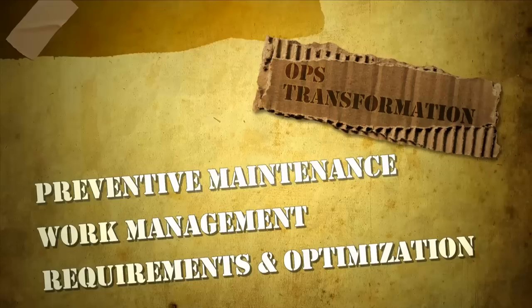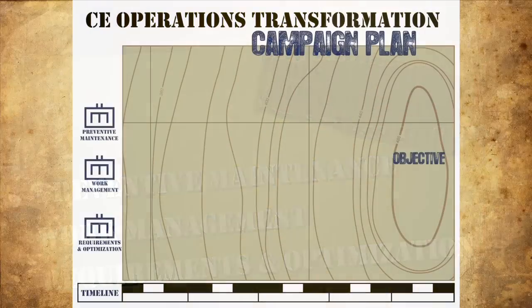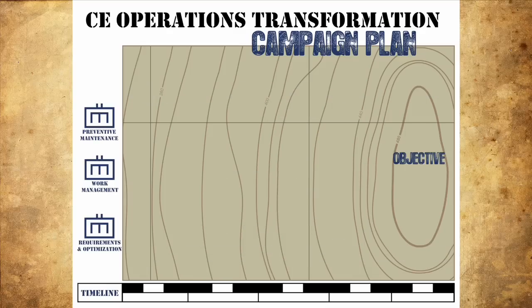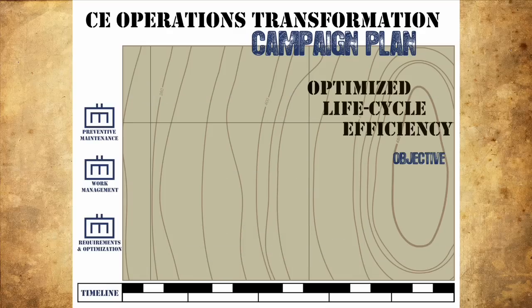Success on a modern maintenance battlefield with fewer troops, less equipment, and dwindling supplies demands a campaign plan to synchronize a way forward to help us achieve enterprise goals. This strategy is largely framed by Program Action Directive 1203, Implementation of Enterprise-Wide Civil Engineer Transformation. The end objective is to optimize life cycle efficiency by placing the right amount of resources at the right time to provide the least risk to the mission while being the most cost-effective course of action.